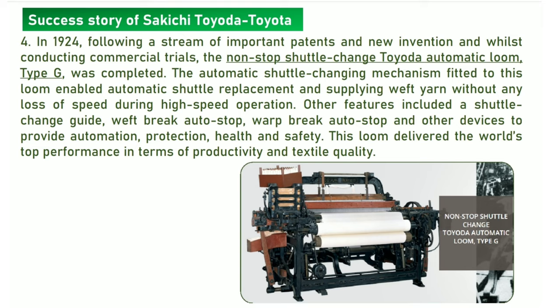Other features included a shuttle change guide, weft brake auto-stop, warp brake auto-stop, and other devices to provide automation, protection, health and safety. This loom delivered the world's top performance in terms of productivity and textile quality. This was the success story of Sakichi Toyota, the founder of Toyota Industries Corporation.